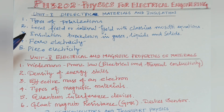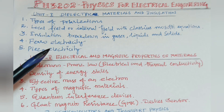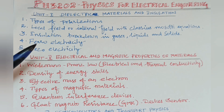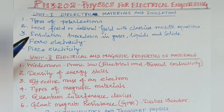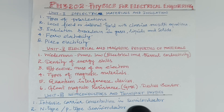The second question is Local Field or Internal Field with the Clausius-Mossotti Equation. This is a 16-mark question on local field and internal field, sometimes including the Clausius-Mossotti Equation.